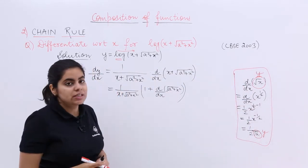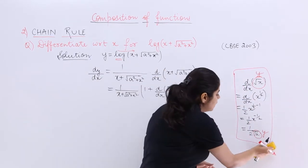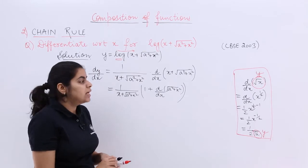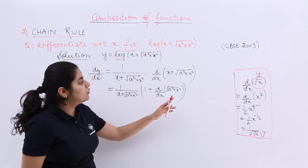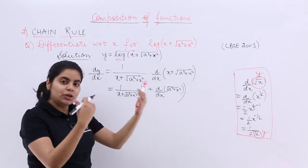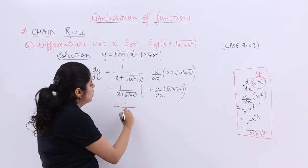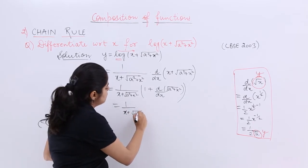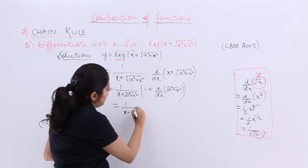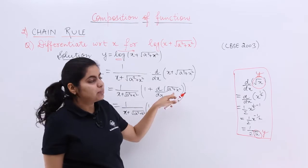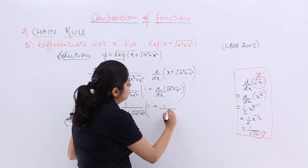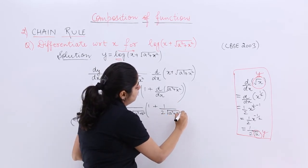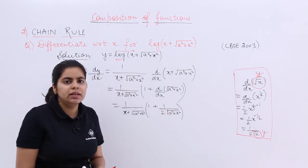Applying what we just learned about differentiating a root: if you have a root, just write 1/2 and copy the term into the denominator. So the expression becomes: 1/(x + √(a² + x²)) times the bracket, which is 1 + 1/2 · 1/√(a² + x²). But we're still not done — we must also differentiate the inward term a² + x².